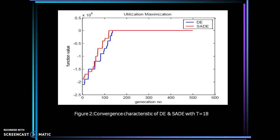That is differential evolution and self-adaptive differential evolution have been shown, and in these cases the utilization value is same, but it is clear that SADE has faster convergence compared to DE in all three cases.